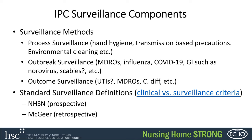For outcomes surveillance — UTIs are a big one, along with multi-drug resistant organisms and C. diff. We're used to using NHSN for COVID, but NHSN does have routine long-term care modules as well, and you can use that system to track those outcomes. You want to make sure you are using standard surveillance definitions.